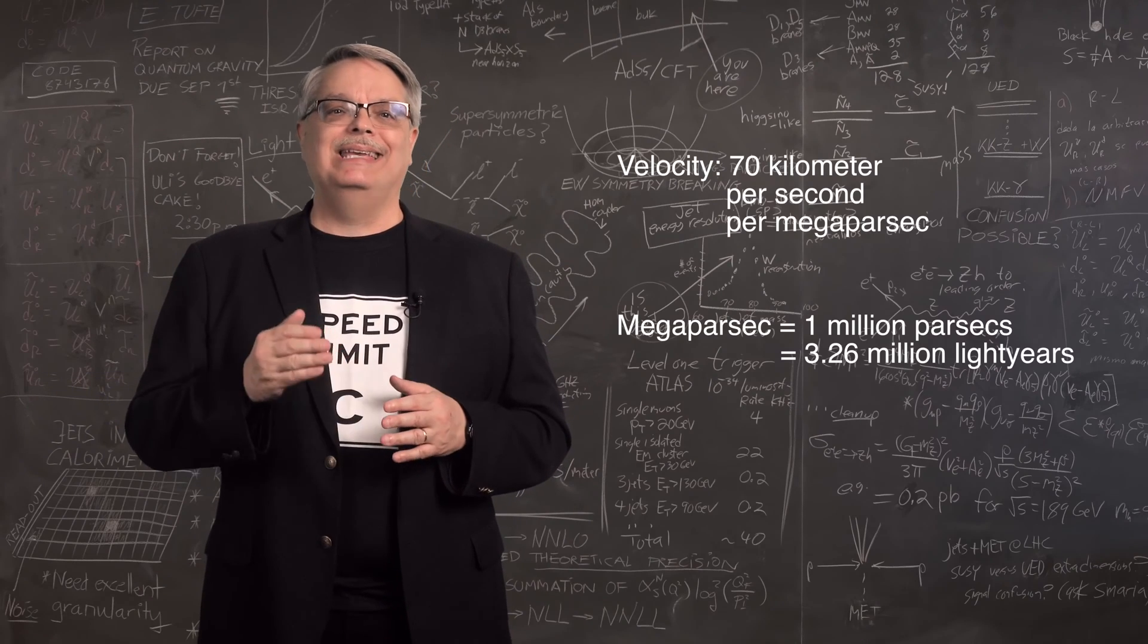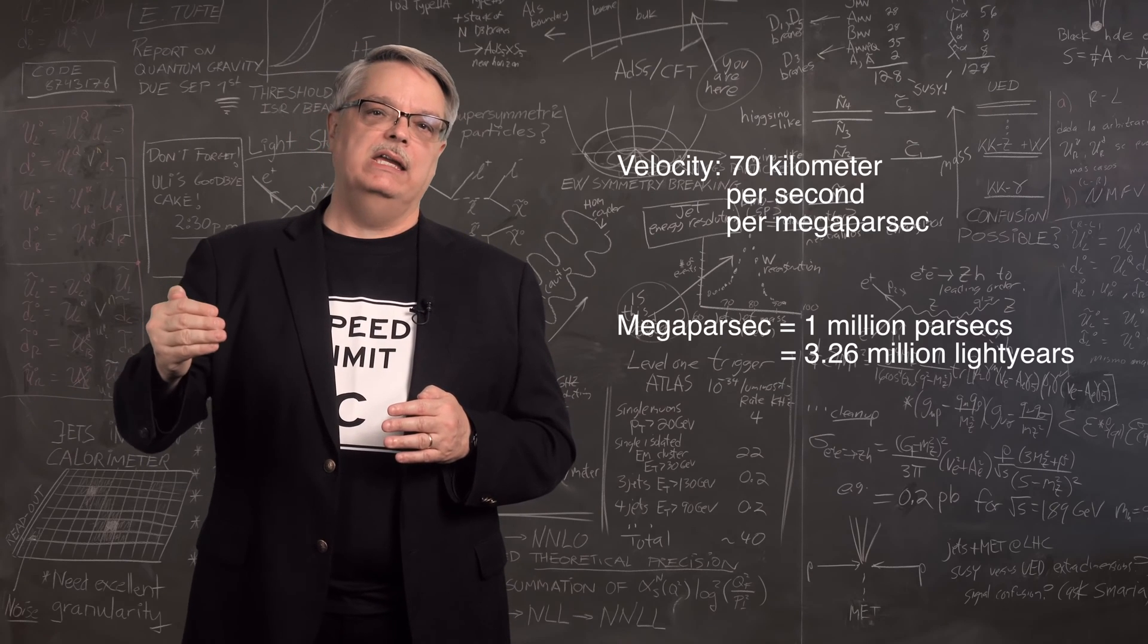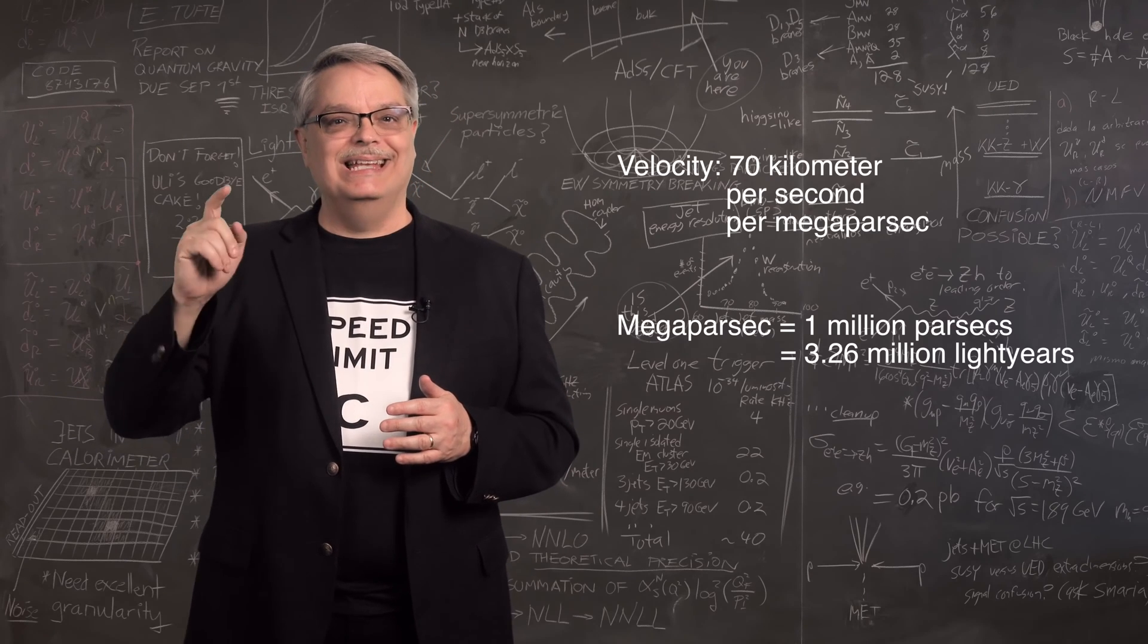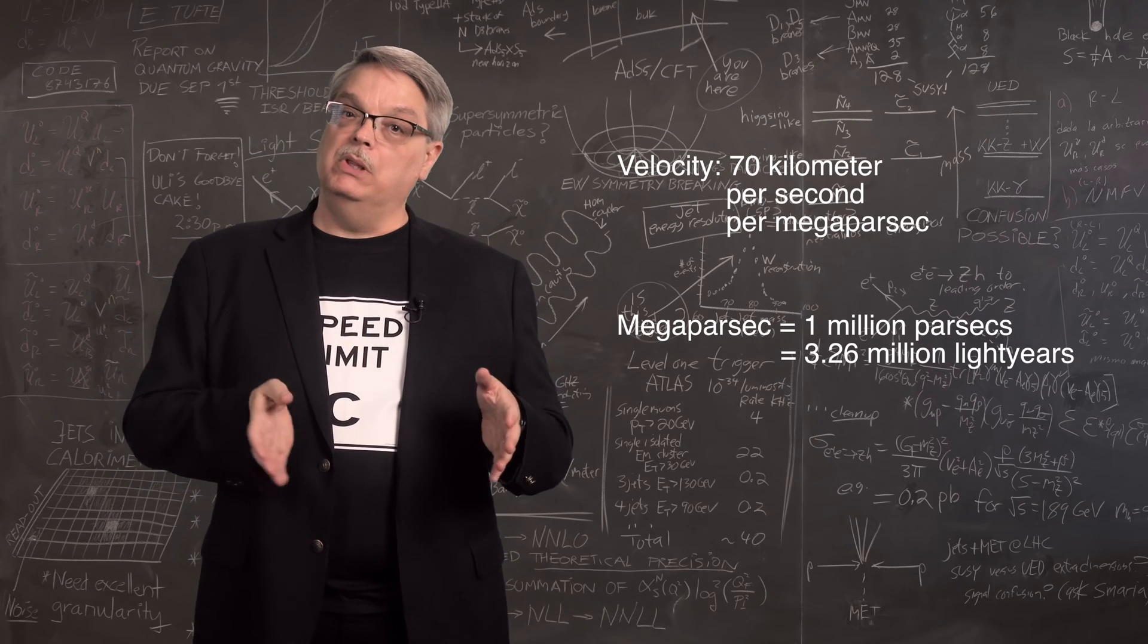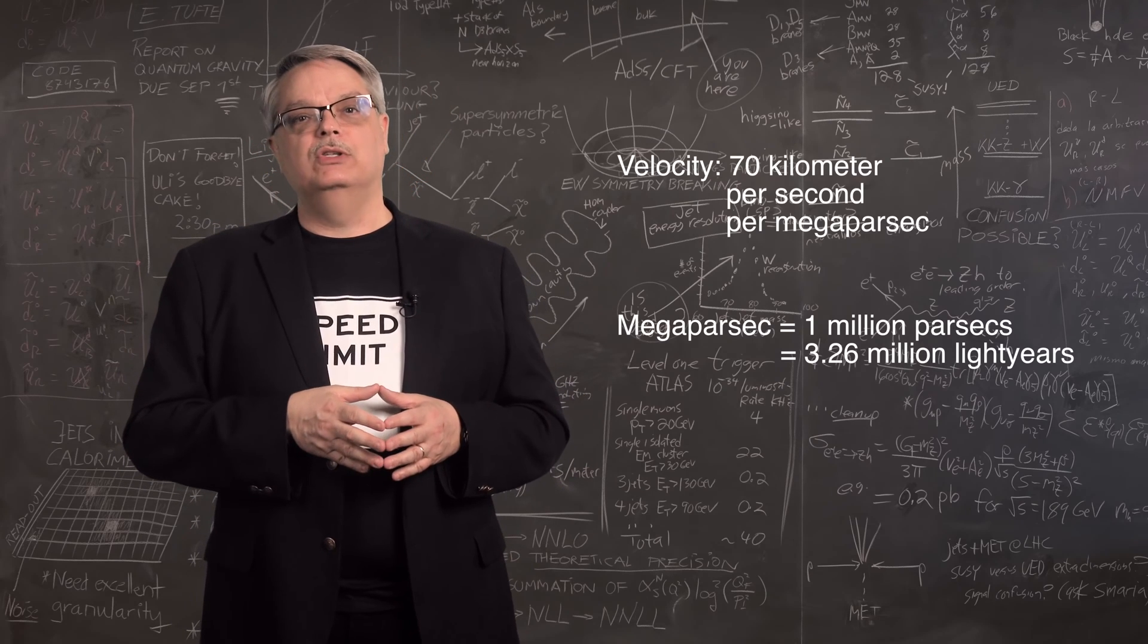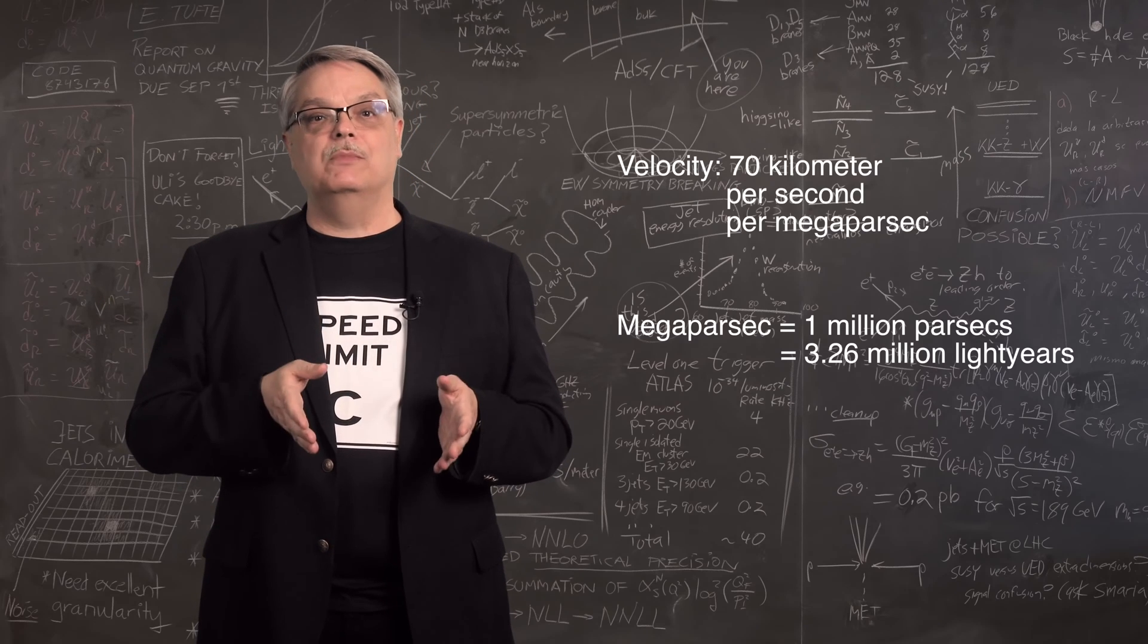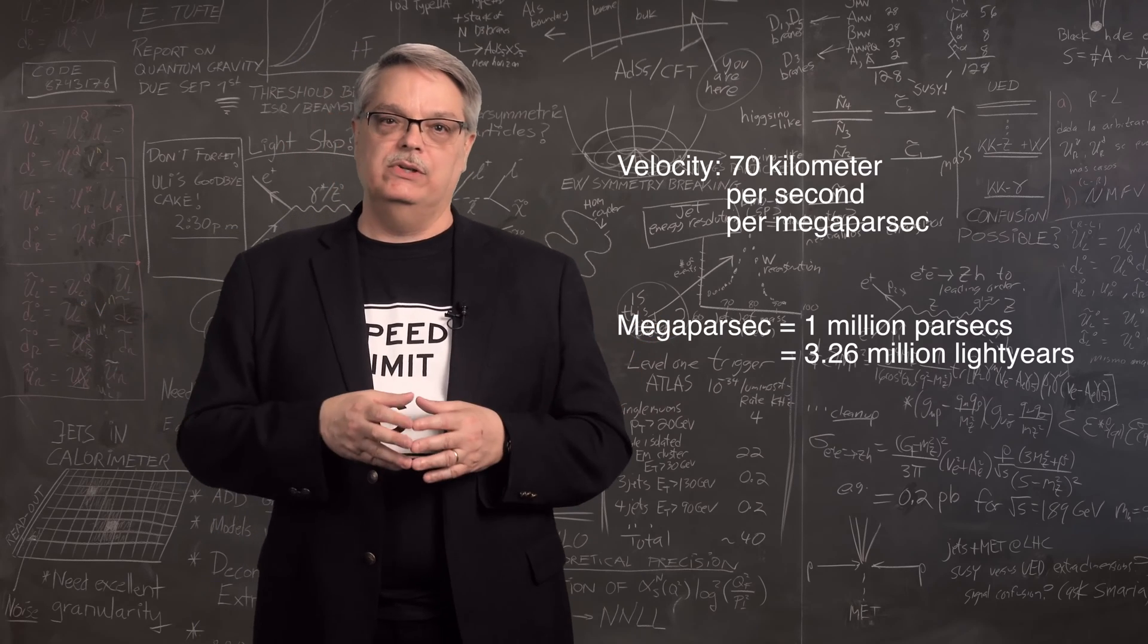Using modern numbers, a galaxy a megaparsec away is moving away from us at 70 kilometers per second. A megaparsec is a million parsecs, which is 3.26 million light years, by the way, but astronomers use megaparsecs, so I will too.